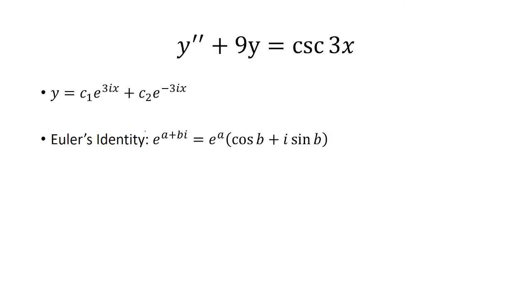Now we can use Euler's identity. So Euler's identity says e^(a+bi) is equal to e^a times cosine b plus i sine b.